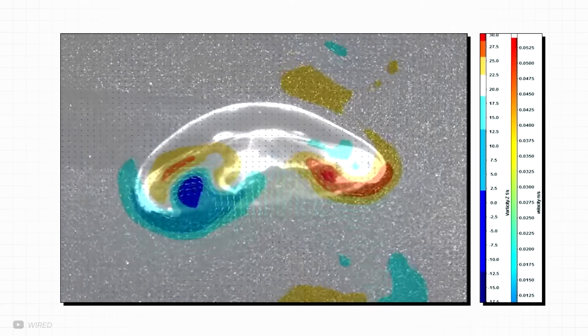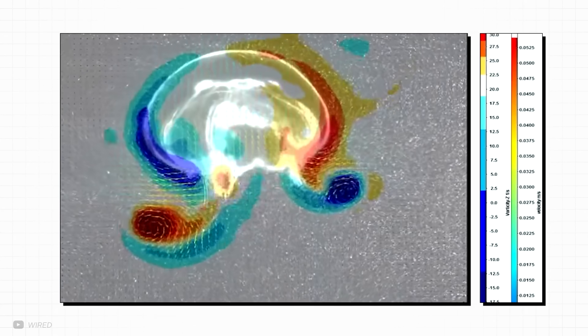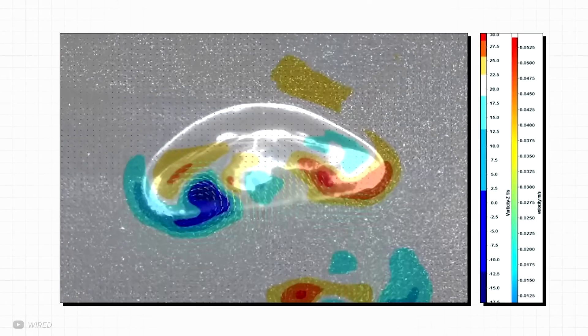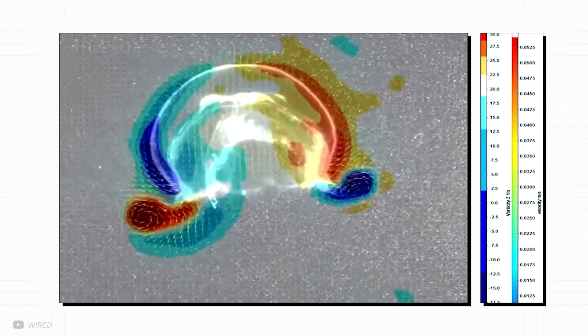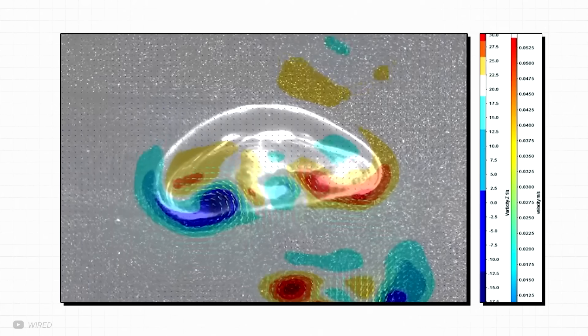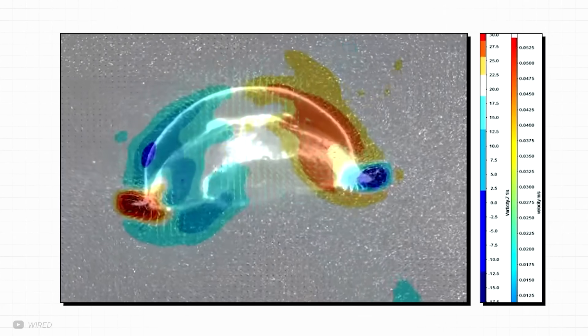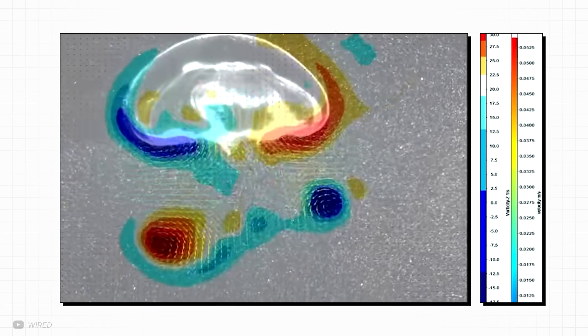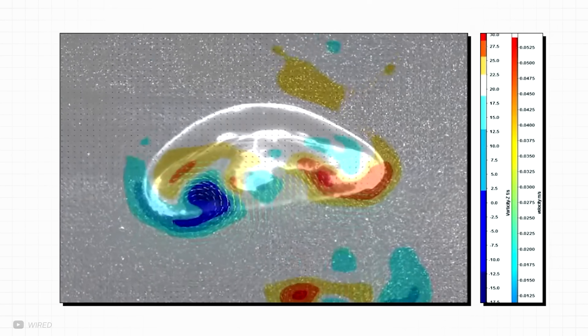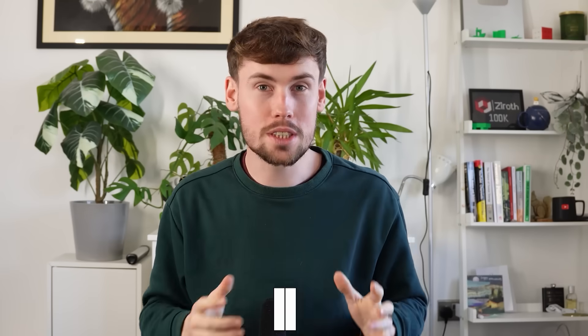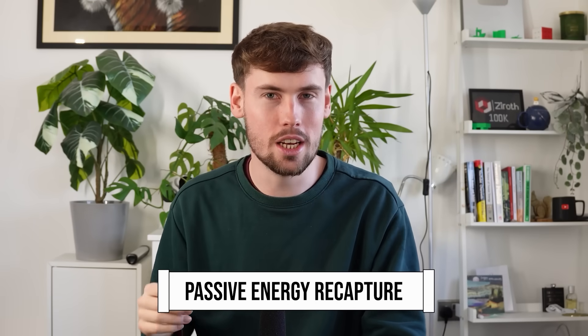I found this incredible simulation that shows the high and low-pressure areas and vortices moving around as the jellyfish glides through the water. The colours here represent velocity, so even though the vortices are red and blue, they both indicate low-pressure zones. Through what is called passive energy recapture, those low-pressure areas and vortices underneath the relaxing jellyfish push it along with no additional effort.